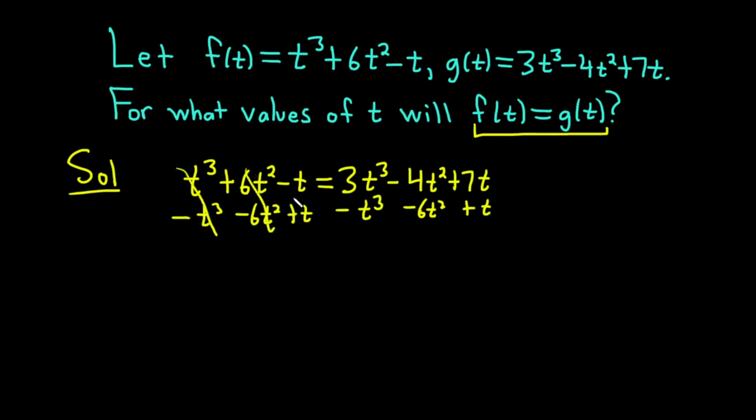So gone, gone, gone. 3t cubed minus t cubed minus t cubed is 2t cubed. I'm going to write it on the left hand side. Negative 4t squared minus 6t squared is minus 10t squared. 7t plus t is 8t. And this is equal to zero.